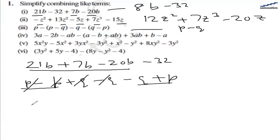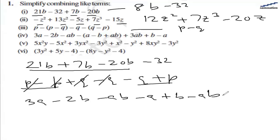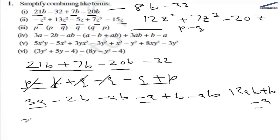For the fourth one, let's first open the bracket. So we have 3a minus 2b minus ab minus a plus b minus ab, and then 3ab and plus b minus a. Let's combine all the a terms together: 3a minus a and minus a gives 3a minus 2a, which is a. Now let's combine all the b terms: minus 2b plus b and plus b gives zero, so they cancel out.